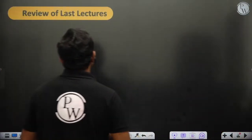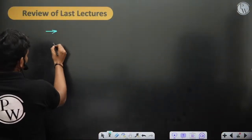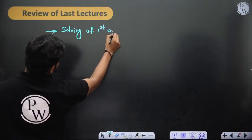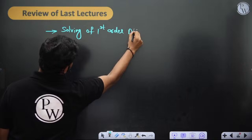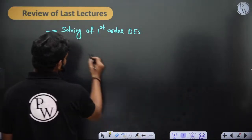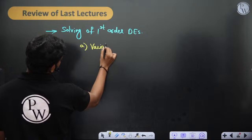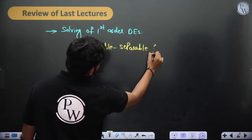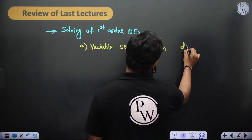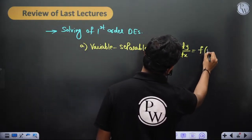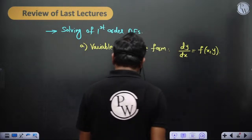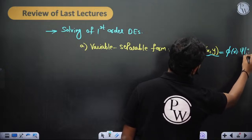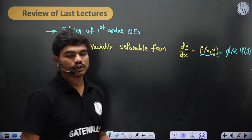Coming to the last lecture — we were discussing first order differential equations and solving of first order DEs. We saw certain techniques like the variable separable form, where dy/dx equals some function of x and y, and that function can be split as a product of two functions: one purely a function of x and one purely a function of y.